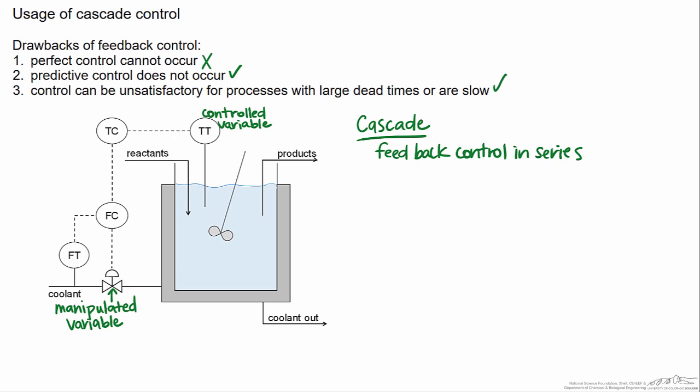The temperature controller does not directly connect to the valve. There is a second layer here where the temperature controller sends its signal to a flow controller, and then the flow controller is also taking information from the flow rate of the coolant. So what it is measuring here is the coolant flow rate, and the flow controller is taking that information in addition to the information from the temperature controller in order to adjust the valve.